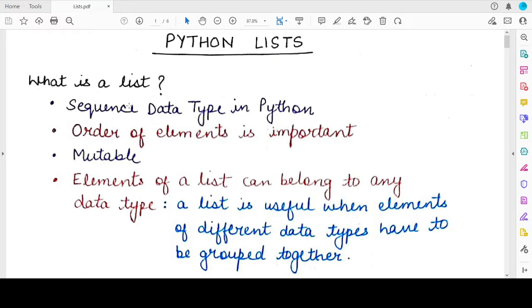So first coming to the topic, what is a list? A list is a sequence data type in Python. Sequence means it will contain one or more than one element. It can also contain zero elements or one element or more than one element.